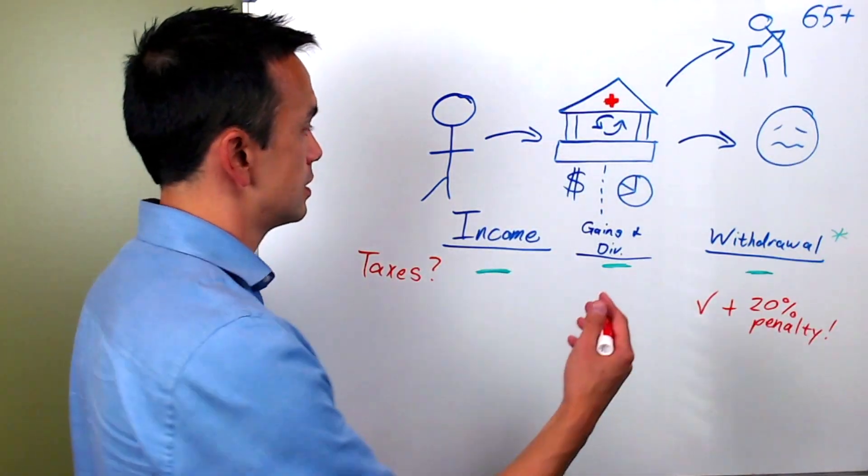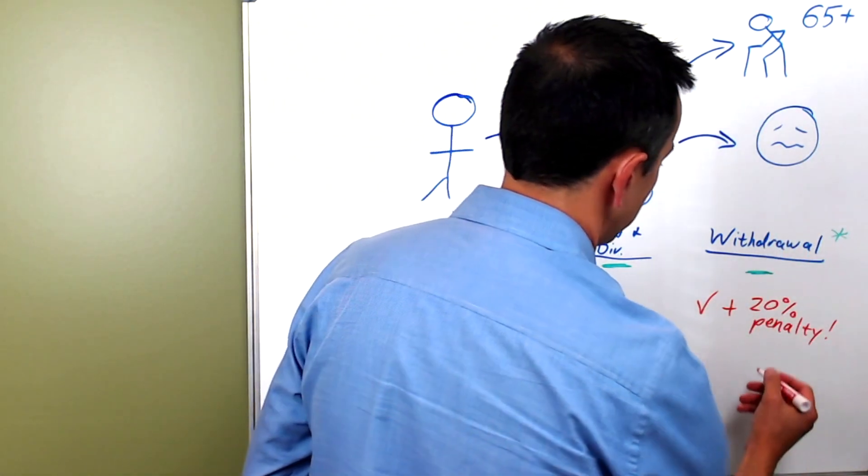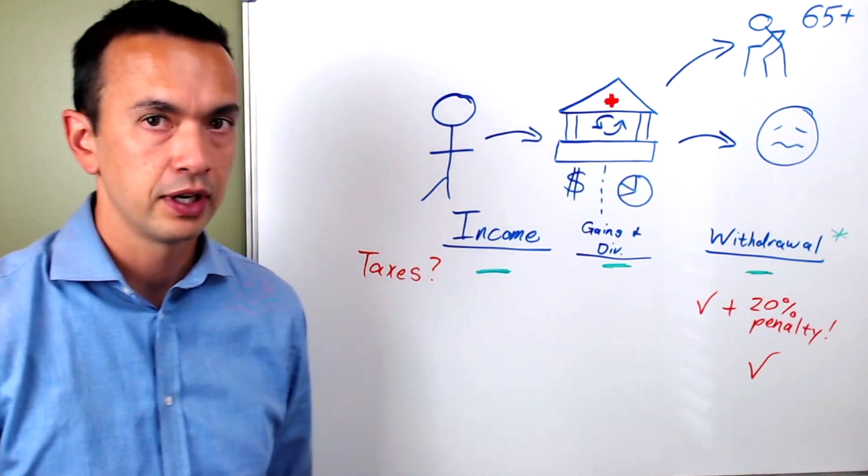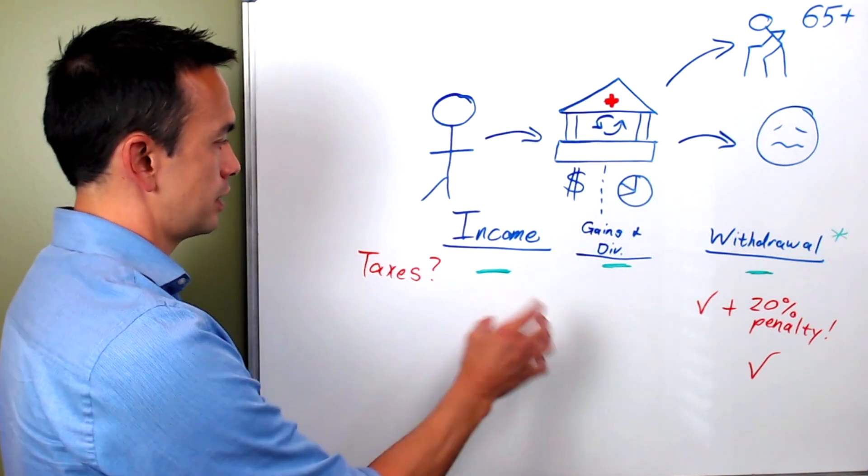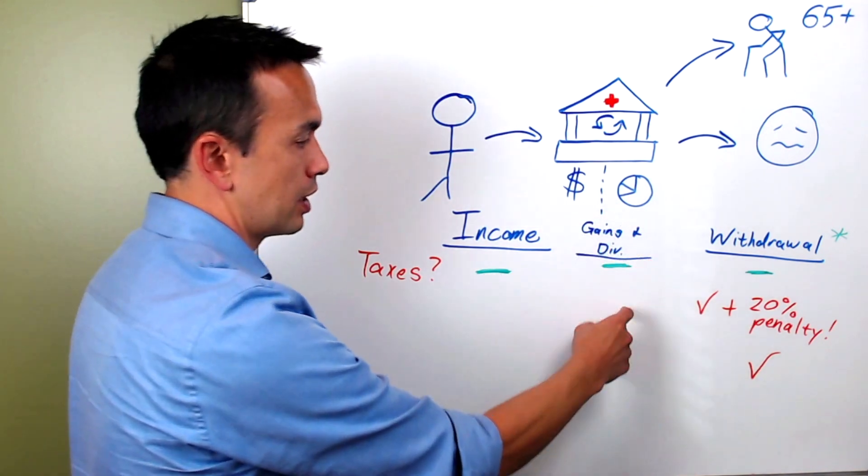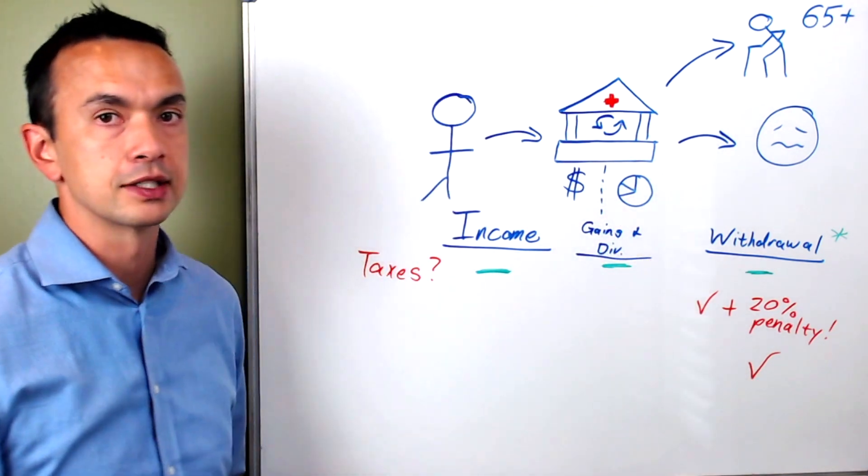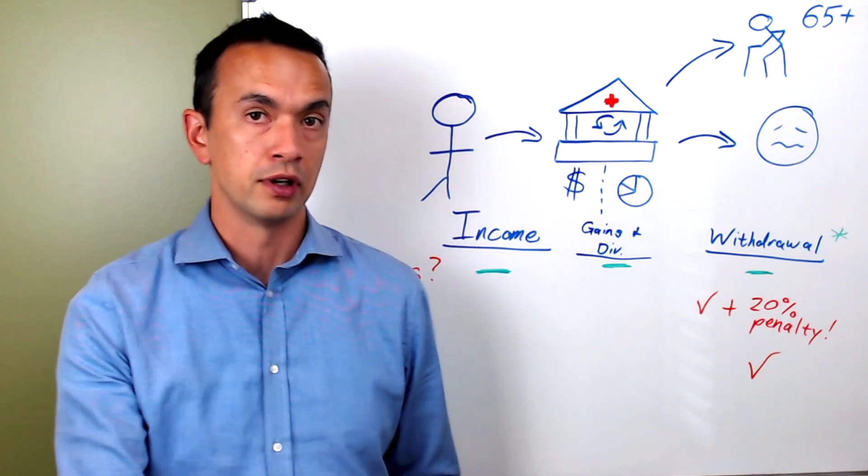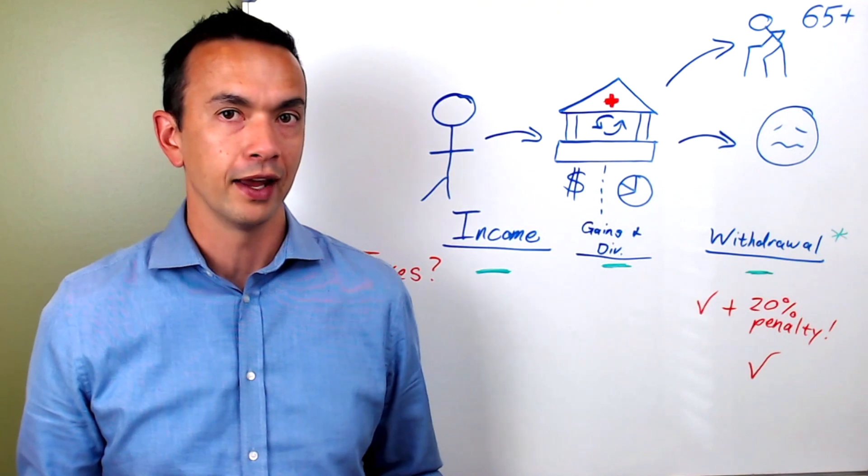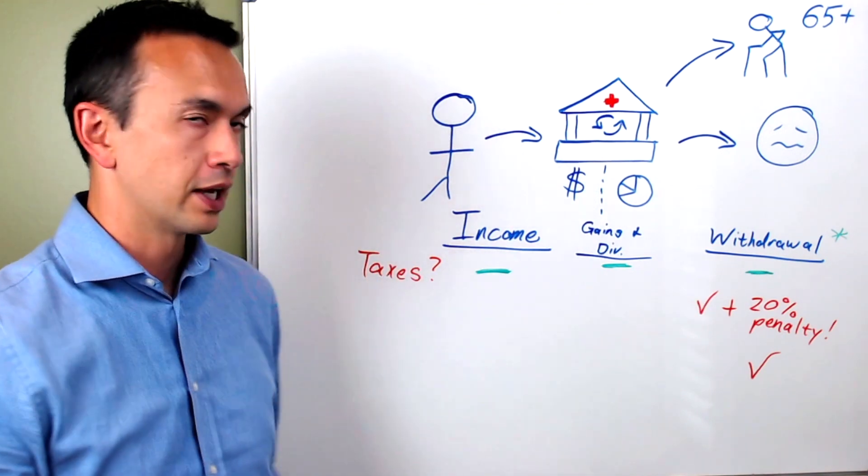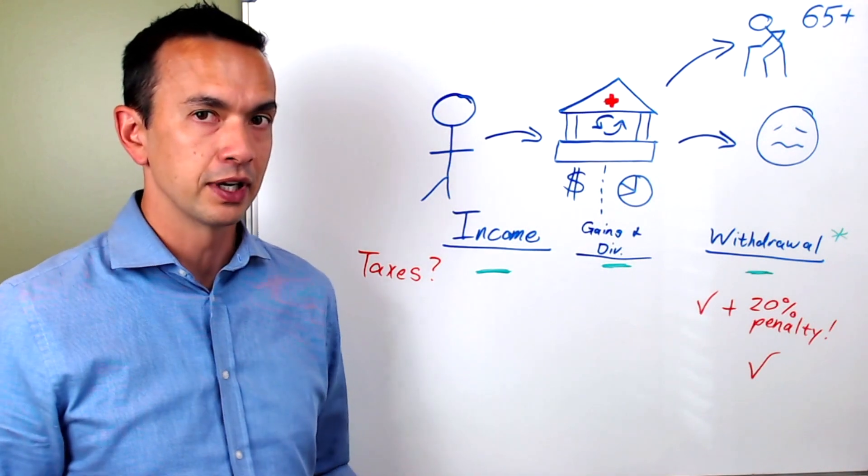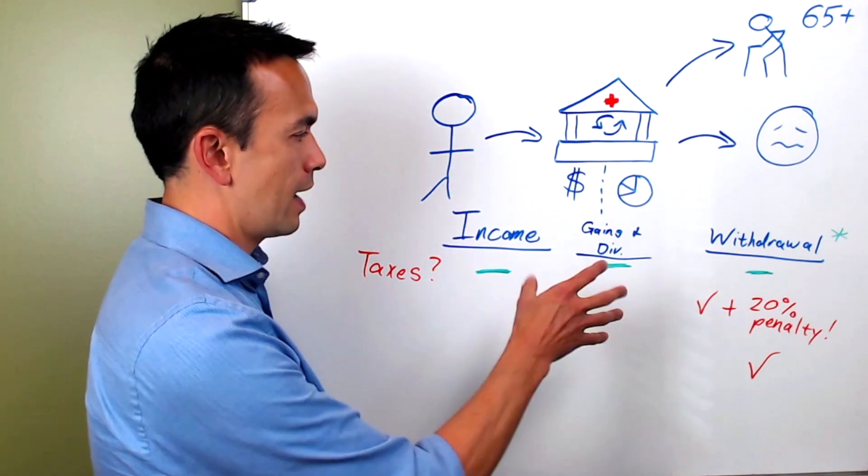So what this means is that if you wait until you turn 65 and there's not that 20% penalty, the way that this money is treated is you're not taxed on it on the way in, it's not taxed while it's in the account, and then you just pay regular income taxes whenever you withdraw. That sounds a lot like a traditional IRA or a 401k.